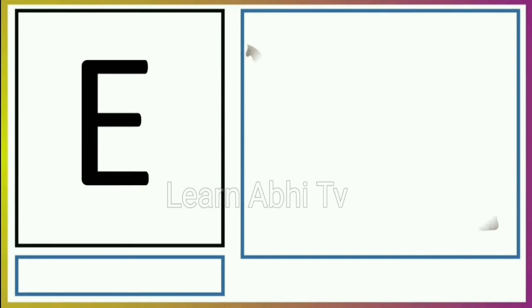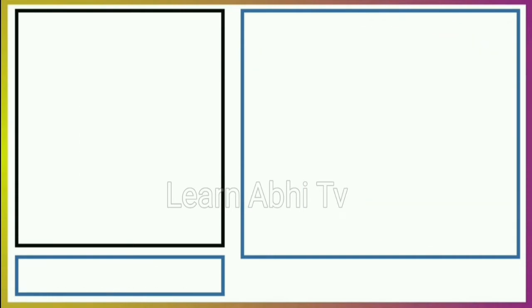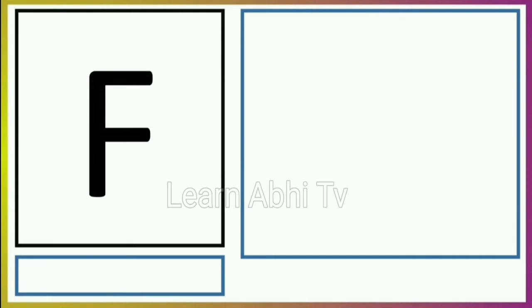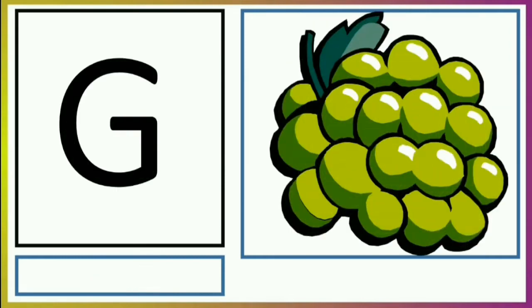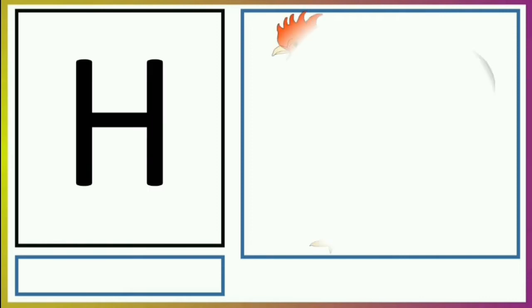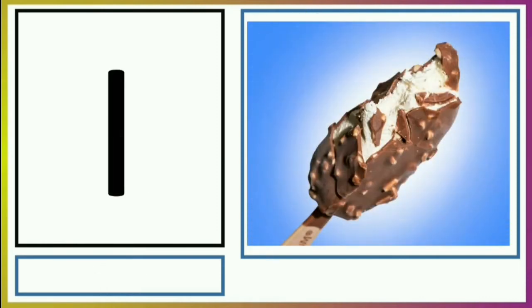E for Elephant. F for Fish. G for Grapes. H for Hen. I for Ice Cream.